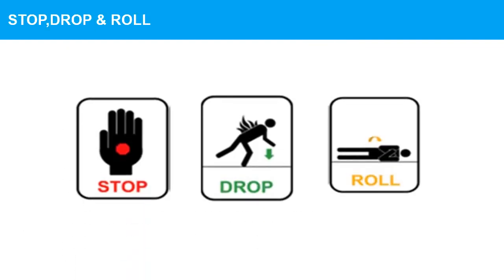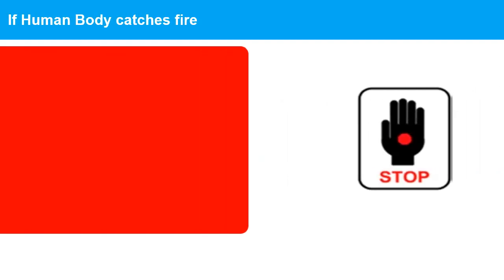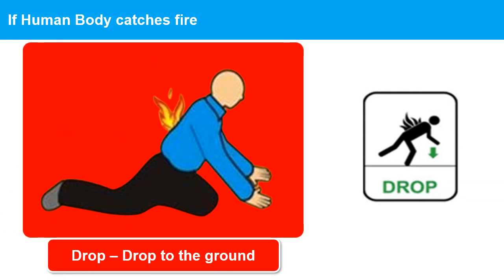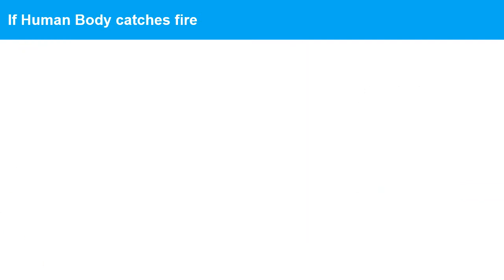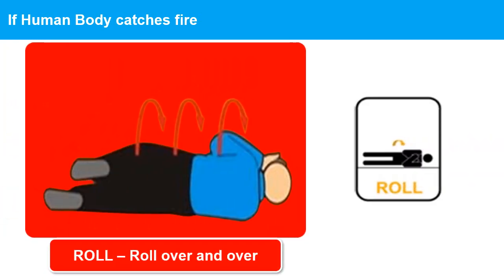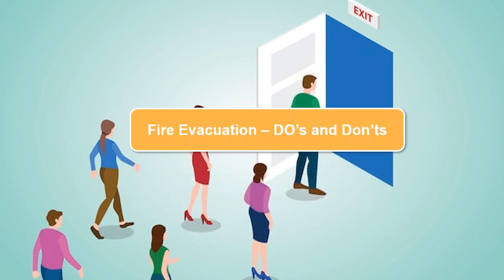Stop, Drop and Roll is a fire safety technique to protect yourself if your clothing catches fire. Stop: do not run or panic — stop where you are and remain calm. Drop: drop down to the ground immediately and cover your face with your hands to protect it from flames and smoke. Roll: start rolling back and forth on the ground to extinguish the flames, covering your entire body including your face and hair.